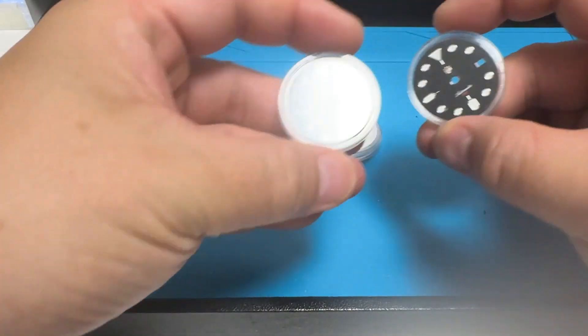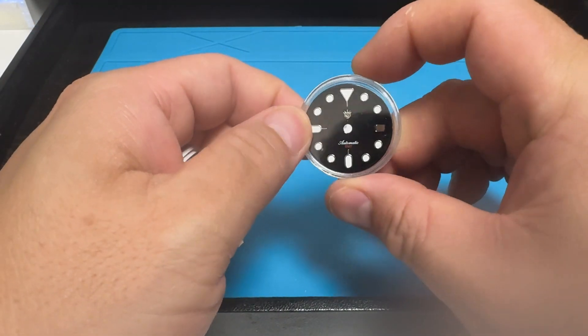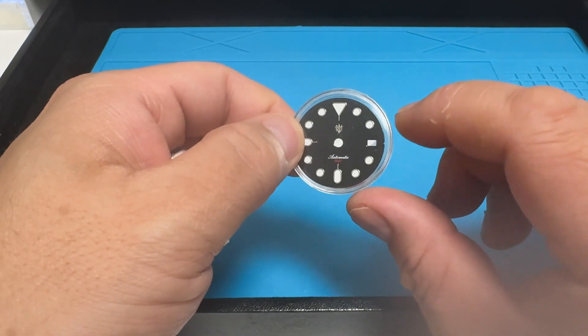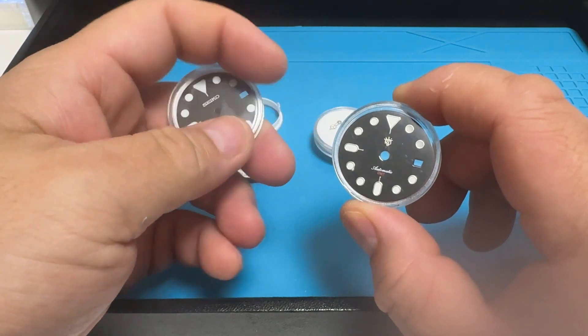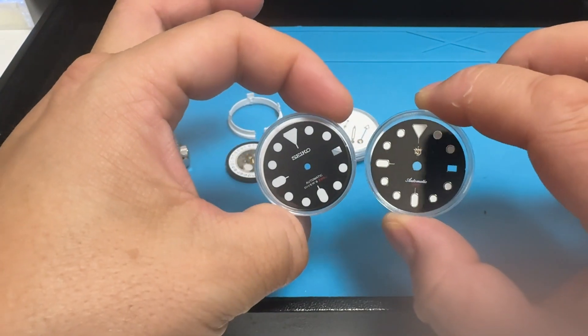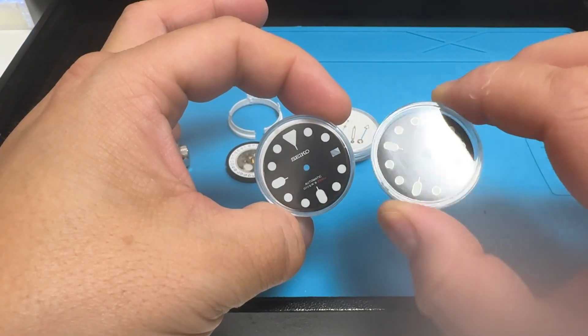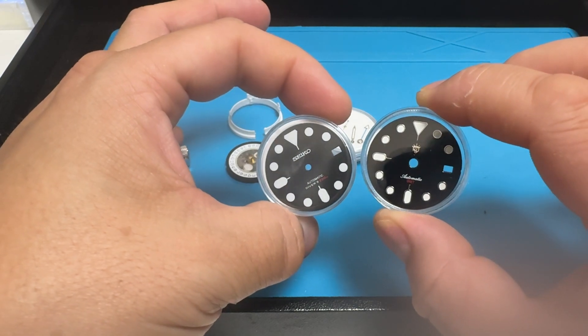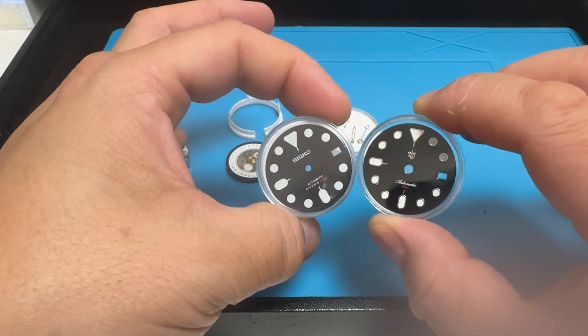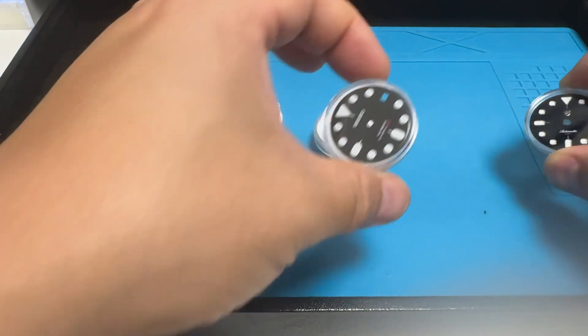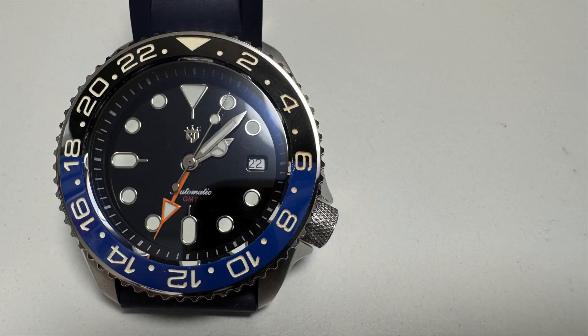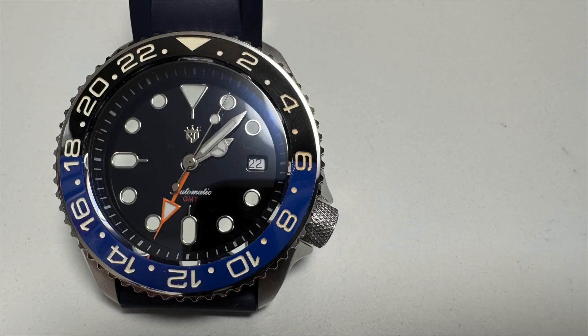Next we'll need a dial. This is an NH34 dial which has a larger hole in the center to accommodate the GMT hand. Typical NH35 dials have a smaller hole. The NH34 and 35s have the date window which is able to accommodate the Ronda's date complication. It doesn't line up perfectly, it's kind of like half a millimeter off but it's good enough. If this bothers you, just put in a no date dial.